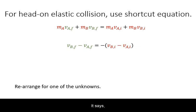It says that the magnitude of the relative velocity between the two objects will be preserved from before to after the collision. The direction will change signs. We use this to get an expression of one unknown in terms of the other.